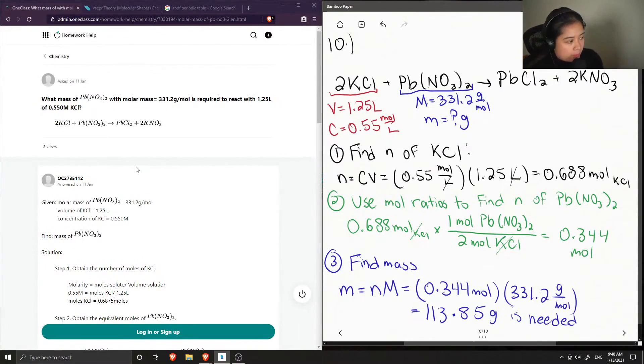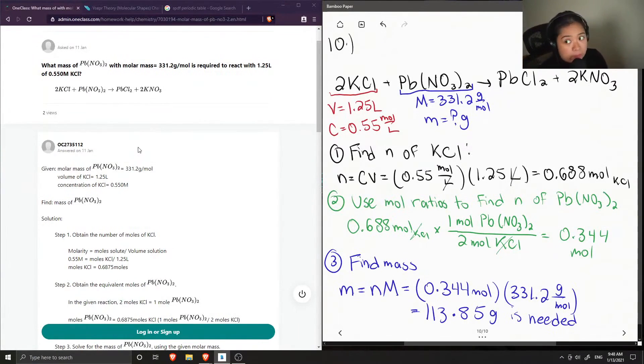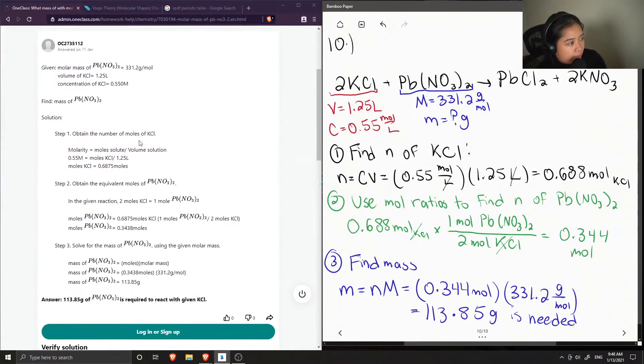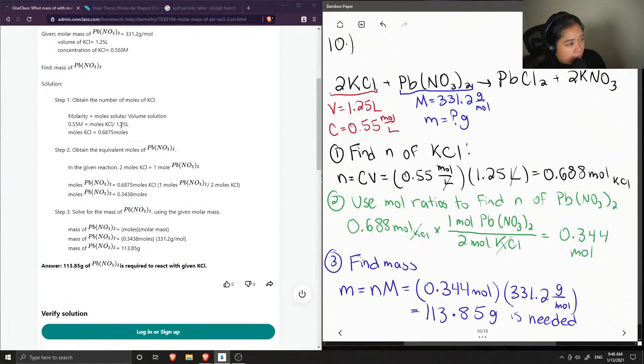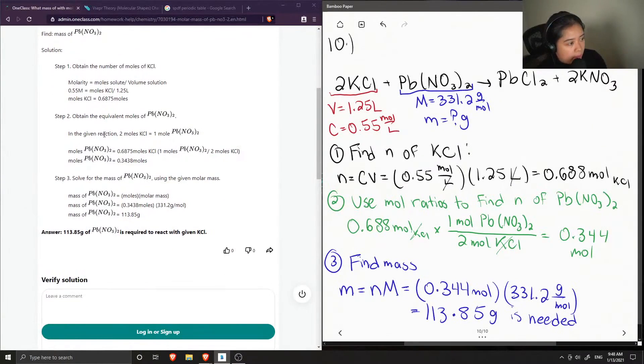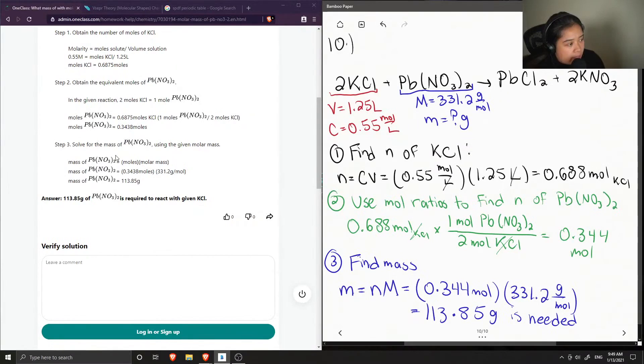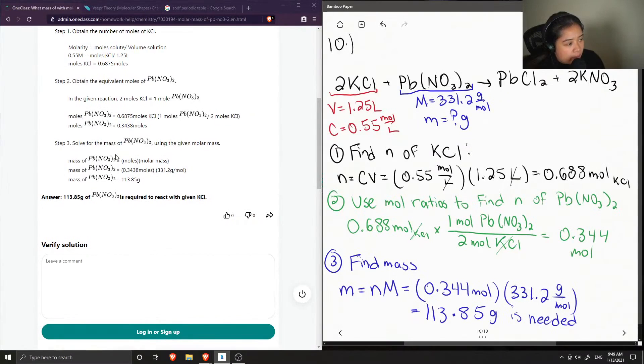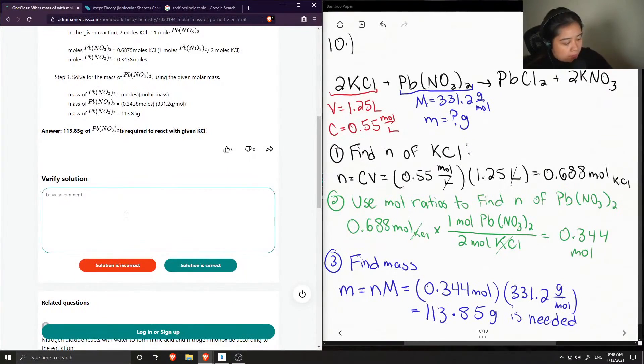Okay, so let's see what our junior tutor said. They wrote out everything that was given, found the number of moles of potassium chloride. Yep. And then they did the mole ratios to obtain the equivalent moles of lead nitrate and got 0.3438. And lastly, they solved for mass by multiplying the number of moles times the molar mass. Okay, so this solution is...